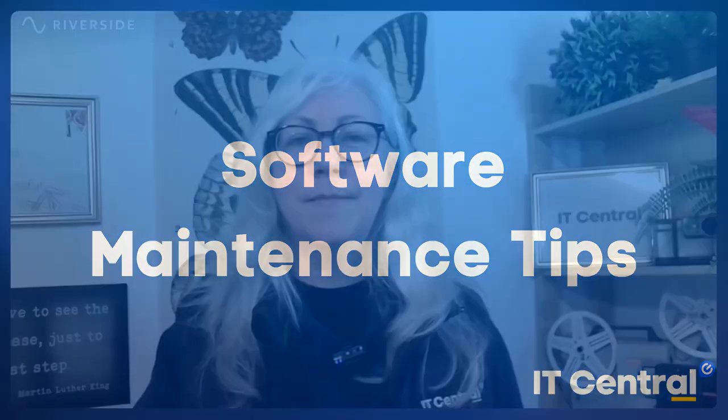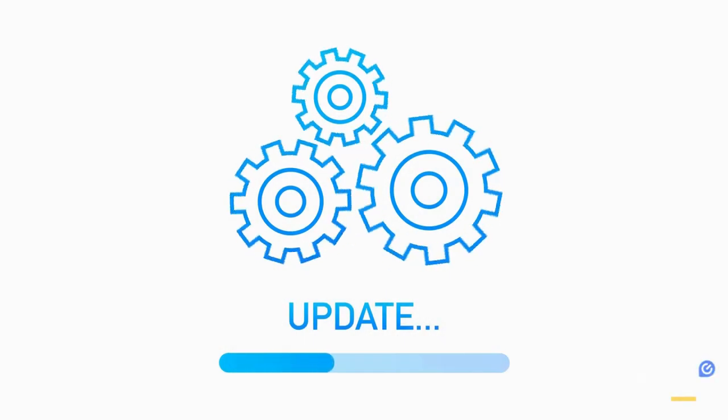Software Maintenance Tips: The next step in computer maintenance involves updating all of the software installed on your machine. This applies both to applications like Microsoft Office, as well as the operating system itself. Updating these programs ensures that they are running at peak performance with all of the latest bug fixes and security patches applied. To update software manually, open the program itself, usually from the Start menu in Windows, and check for any updates under the Help menu option. For Windows 10 and 11, those of you that have automatic updates enabled in your settings, this process will happen automatically without any work on your part.